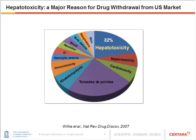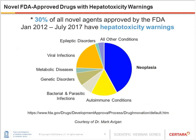Drug-induced liver injury or hepatotoxicity is a major reason for drug withdrawal from the U.S. market. A more recent analysis showed that among novel agents approved by FDA since 2012, about 30 percent of them have hepatotoxicity warnings in their drug label. Most of the indications are neoplasia, viral infection, and autoimmune conditions. Hepatotoxicity is a major issue.